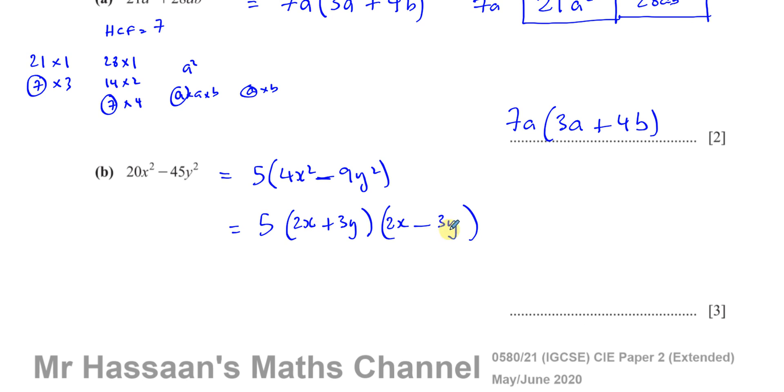That will give you, if you expand it, 4x². And you'll have minus 6xy plus 6xy. Middle term will be gone. It'll become zero. And then 3y times minus 3y is minus 9y². That's the difference between two squares. So this is the final answer in its proper form.